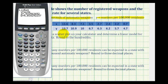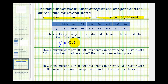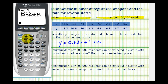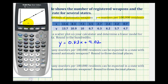Let's go ahead and write this down. Remember, x represents thousands of automatic weapons and y represents the number of murders per 100,000 residents. We'll press Y= and type in our equation, then press GRAPH. We can see this line is an excellent fit for the given data.